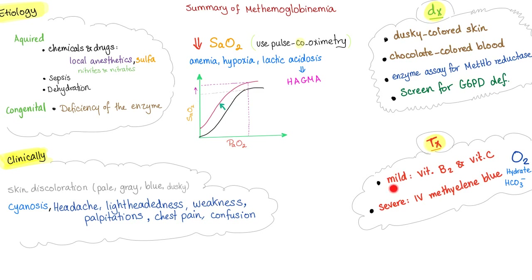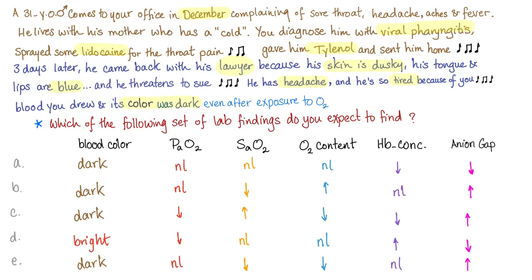Treatment: mild symptoms — vitamin B2 (riboflavin) and vitamin C (ascorbic acid); severe — IV methylene blue; give oxygen; if there's acidosis, give bicarbonate. Here is a case: which lab findings do you expect — regarding blood color, PaO2, SaO2, oxygen content, hemoglobin concentration, and anion gap? Is it A, B, C, D, or E?